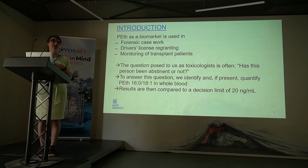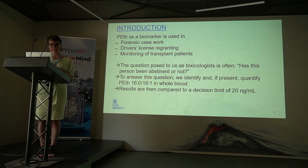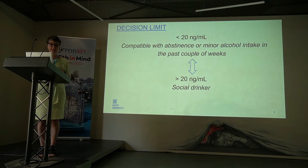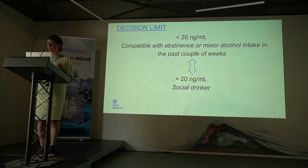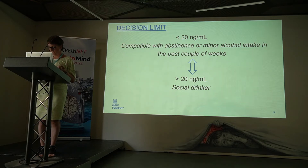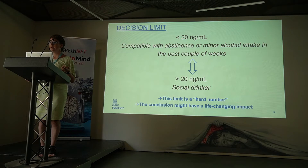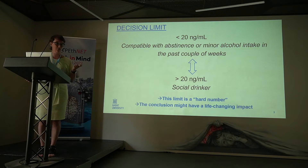That's why we questioned the 29 nanogram per milliliter that we use — is that really a number we can be confident in? And it's very important, because we say when it's lower than 29 nanogram per milliliter, it's compatible with abstinence or minor alcohol intake in the past couple of weeks. When it's higher, we will say it's a social drinker. And for us, it's a hard number. 19 is below, 21 is above. And we know that this conclusion might have life-changing impact — it can be a father who isn't allowed to see his children anymore, or a truck driver who cannot drive his truck anymore.